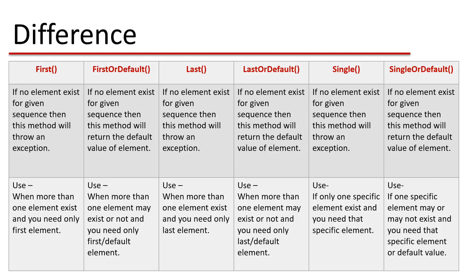If no element exists for a given sequence, the First method will throw an exception. Suppose you have a data source, you have applied a few filters, and based on the filters there is no element in your result — if you still apply the First method, you will get an exception. If you are using FirstOrDefault, you will get the default value of the element when no element is found.